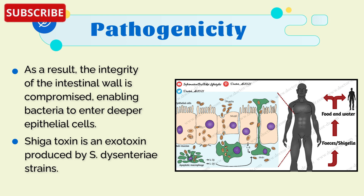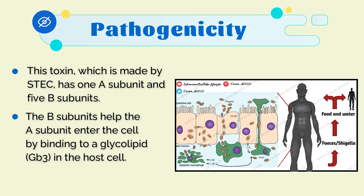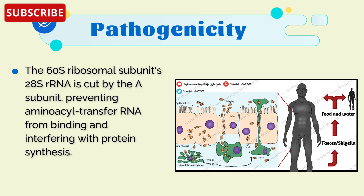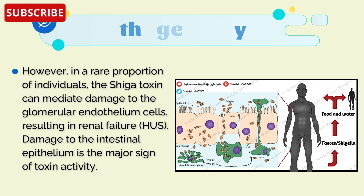Shiga toxin is an exotoxin produced by Shigella dysenteriae strain 1. This toxin, which is also made by Shiga toxin-producing E. coli, has one A subunit and five B subunits. The B subunits help the A subunit enter the cell by binding to a glycolipid Gb3 in the host cell. The A subunit then cleaves the 28S ribosomal RNA of the 60S ribosomal subunit, preventing aminoacyl-tRNA from binding and interfering with protein synthesis. In a rare proportion of individuals, Shiga toxins can mediate damage to the glomerular endothelium cells, resulting in renal failure. Damage to the intestinal epithelium is the major sign of toxin activity.